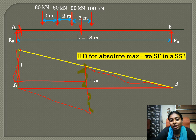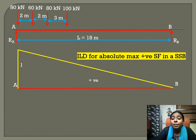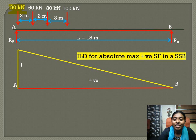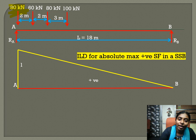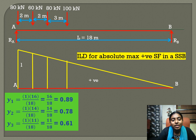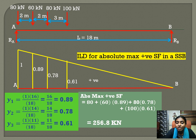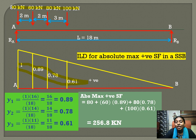For obtaining the maximum absolute positive shear force, we place the trailing 80 kN load at A. This gives us the maximum absolute positive shear force. We then find the ordinates under the other loads using the similar triangle principle, and multiplying the magnitudes of the loads by their respective ordinates gives the absolute maximum shear force of 256.8 kN.